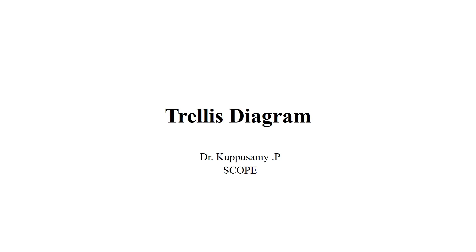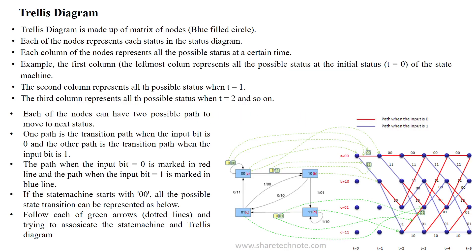Welcome to the trellis diagram session. The trellis diagram is used to represent the state transition diagram which is used in the hidden Markov model. The trellis diagram is made up of a matrix of nodes and is indicated with different numbers of states and paths.